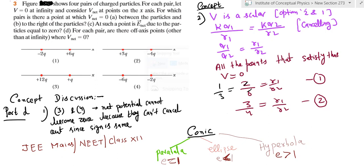Good morning and welcome to part D and the sixth video of this series. Now we have established that pair 3 and pair 4 have identical polarity, so having V net to be 0 is impossible.